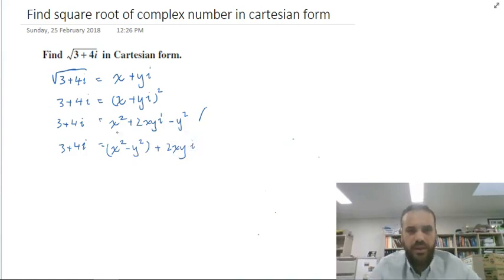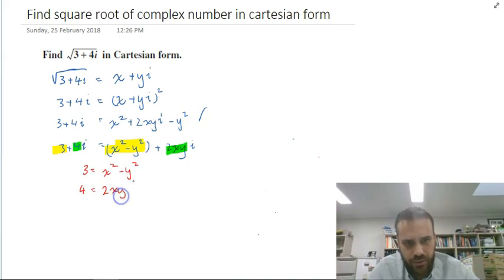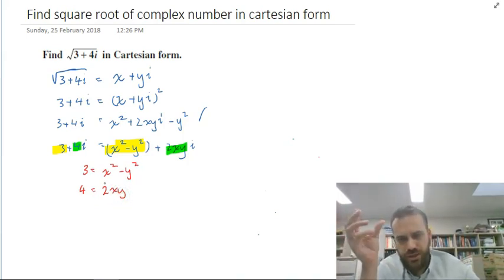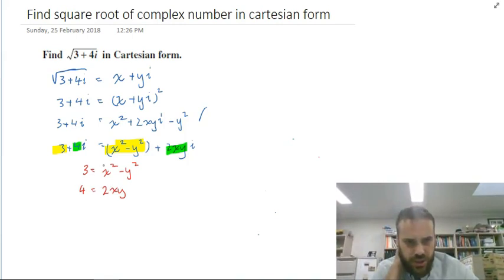So, looking at this, we can now say that 3 is going to be equal to x squared minus y squared and we can say that 4 is going to be equal to 2xy. This allows us to set up some simultaneous equations because we don't know x and we don't know y, but we have two equations, two relationships that can describe it. I have 3 equals x squared minus y squared and I have 4 equals 2xy. Now, I can sub one of those equations into the other. It's going to be easier to sub this equation into this equation.